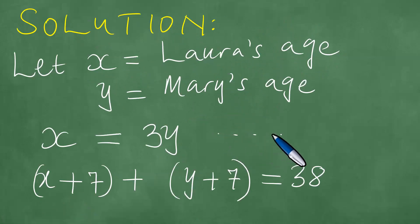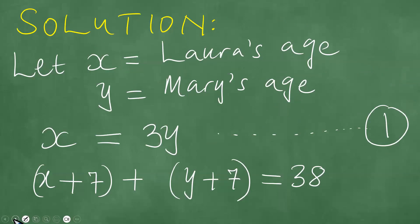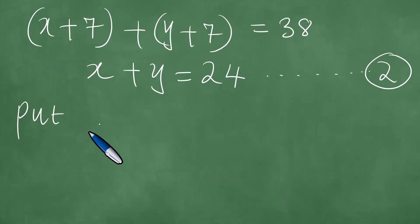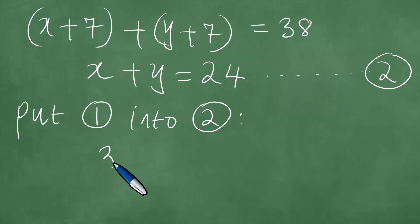So now at this point, what we have here is that x is equal to 3y, and this constitutes the first algebraic equation. And so now we have this here, which is the second algebraic equation. So what we then do here is we put 1 into 2. We put 1 into 2, and if we do that, 1 is x equals 3y. x equals 3y. So wherever there is x, we put 3y. So we're going to have 3y plus y equals 24.